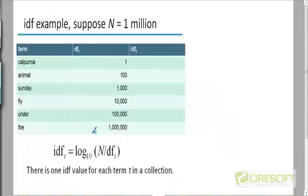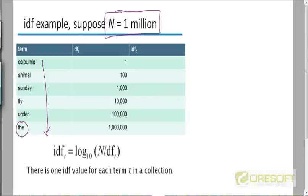Here's an example. Consider words like 'calpurnia', which is a rare word. Words become more and more frequent as you go down this table. At the very bottom you have a very frequent word 'the', which appears in a million documents. We're taking a corpus of a million documents — a stop word like 'the' appears in all of them, whereas a rare word like 'calpurnia' occurs in only one. The IDF of 'calpurnia' will be log of 1,000,000 divided by 1, which is 6.